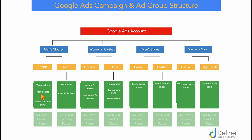The real power in this is that when someone searches 'men's cotton t-shirts' they'll be shown an ad specifically about men's cotton t-shirts and directed to a landing page all about men's cotton t-shirts. This increases the user experience because when they click your ad they go directly to the product they're interested in — not to your home page, a women's dresses page, or men's shoes. It goes directly from their search term through the ad copy to the landing page, following the one keyword theme.